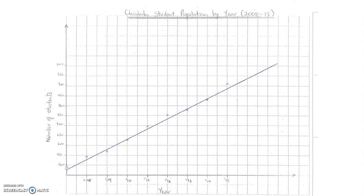You'll recall this Chisholm student population by year graph from the last video. And we used it to determine that the equation of the line of best fit was given as this.